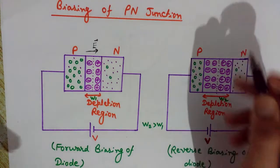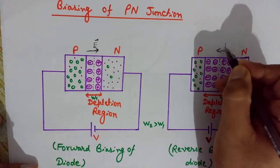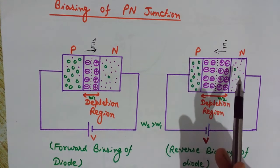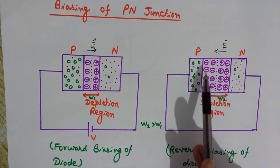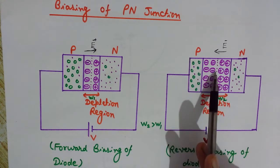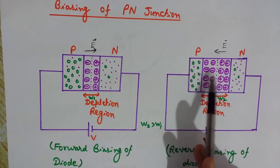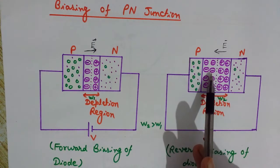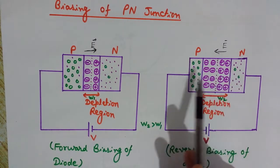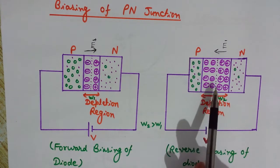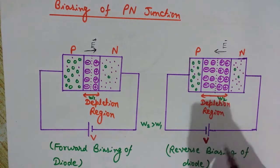In reverse biasing, the electric field is in the opposite direction — from the N side to the P side. Electrons will feel a force away from the depletion region, and holes will also be swept away from the depletion region. Both majority charge carriers feel a force away from the depletion region, so the depletion region width increases and widens.